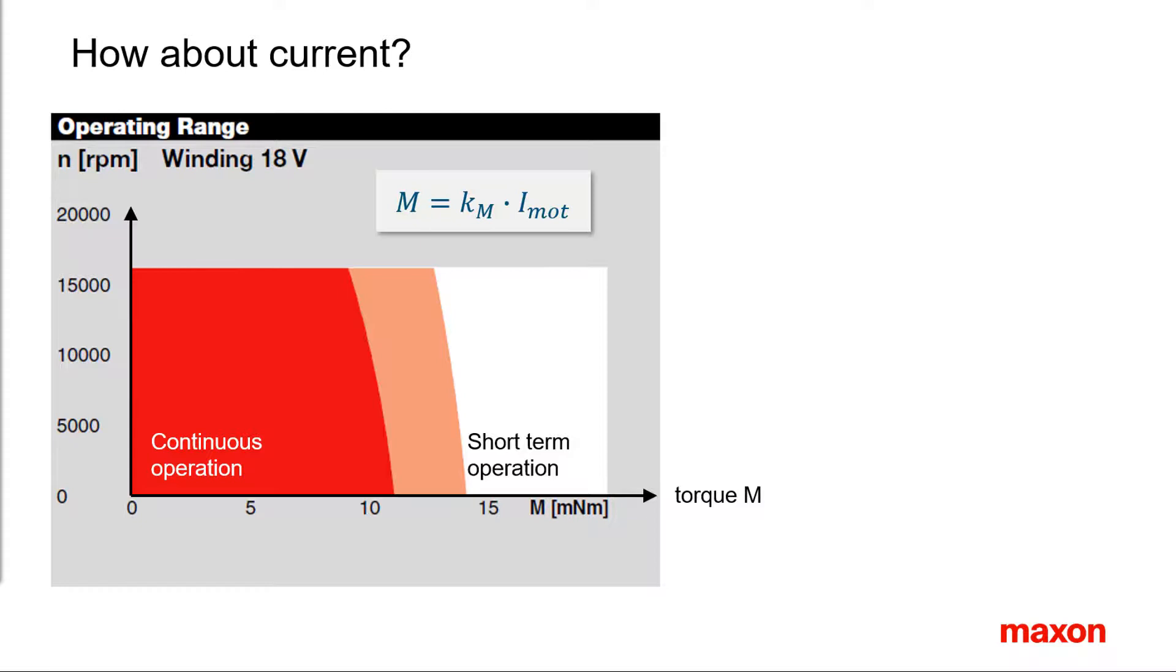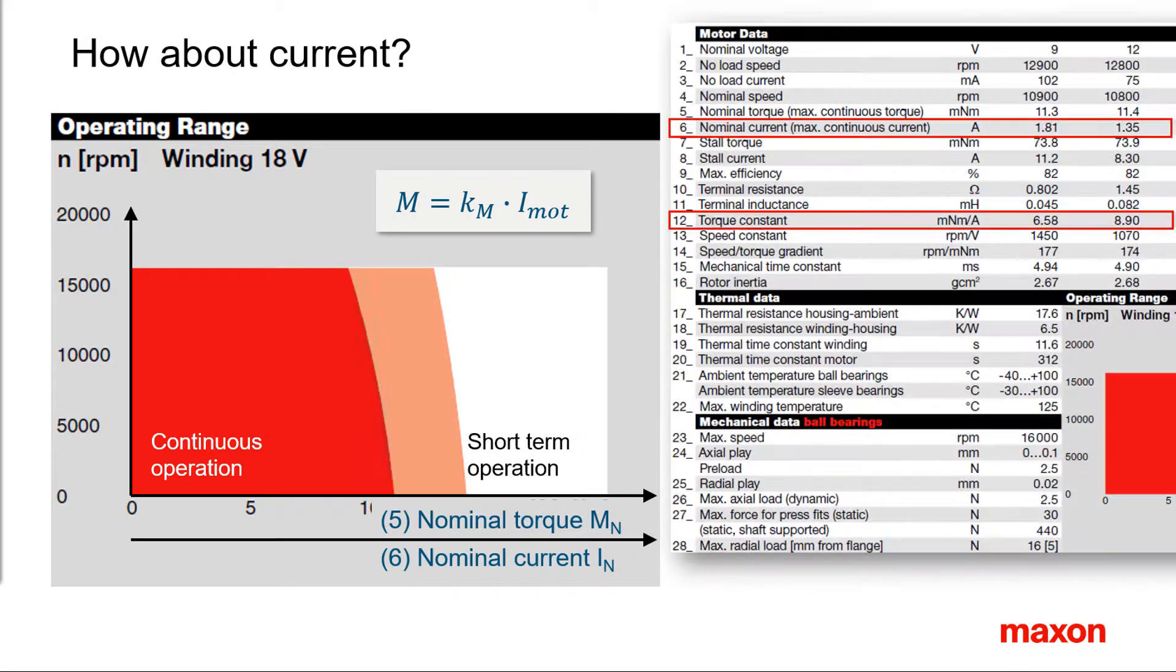For a given motor, current and torque are equivalent. So instead of a torque axis, we could have drawn a current axis. Accordingly, the current at the origin of the nominal torque is called nominal current, IN, and can be found in line 6 of the motor data. The torque constant is given in line 12. It gives the amount of torque in mNm produced per 1A of motor current.